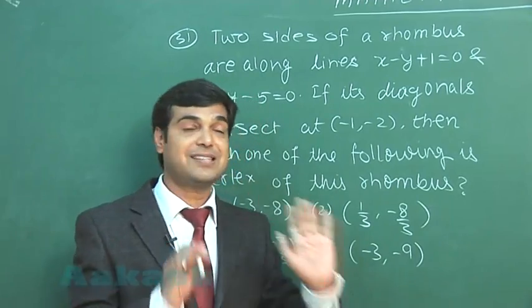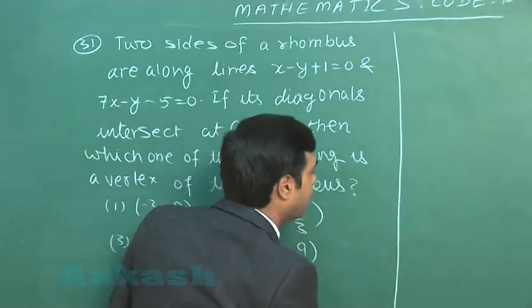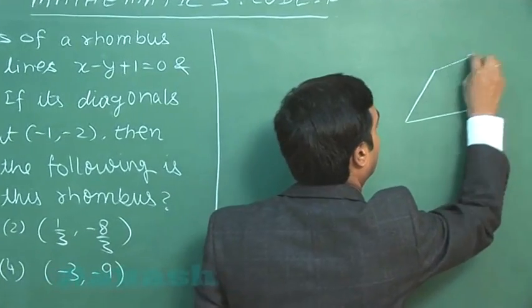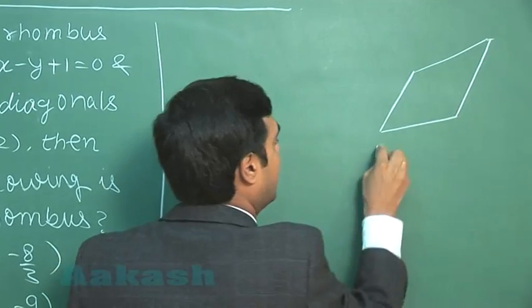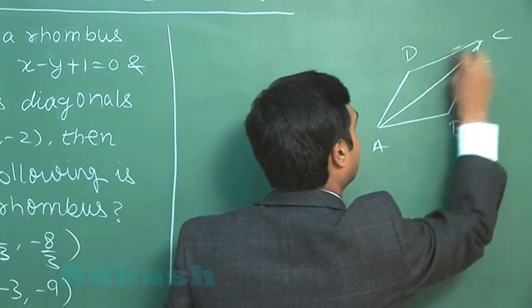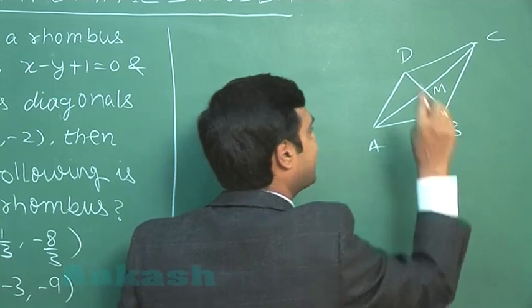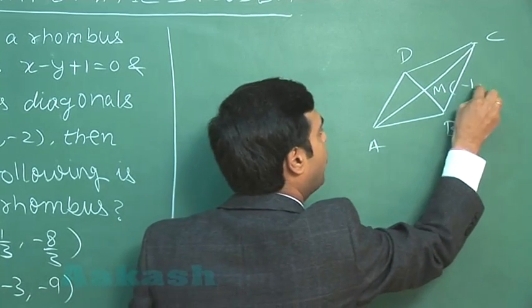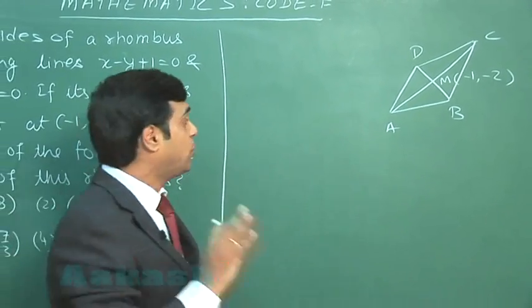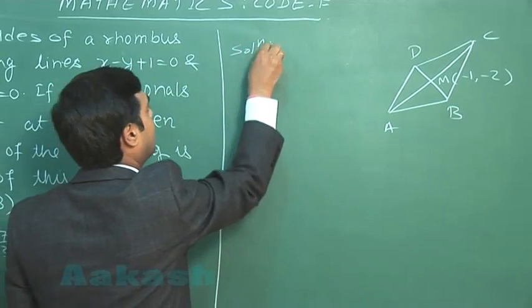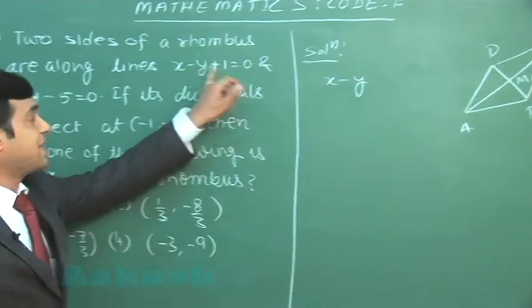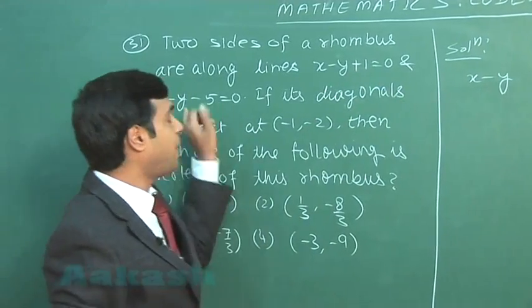So let us start this one. A rhombus, say like this, ABCD. Diagonals AC and BD intersecting at point M whose coordinates are given to me as (-1, -2). Two sides are given to me as x minus y plus 1 equals 0 and 7x minus y minus 5 equals 0.